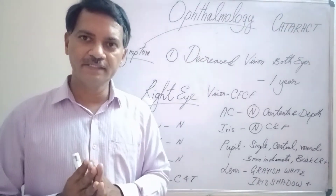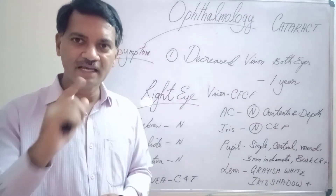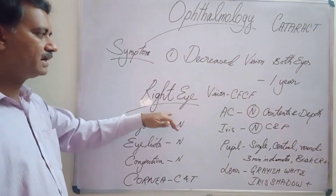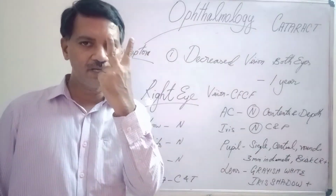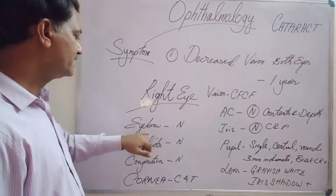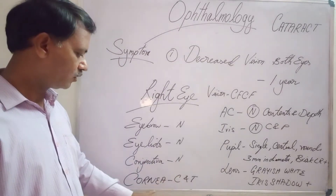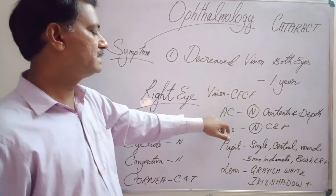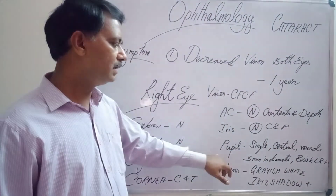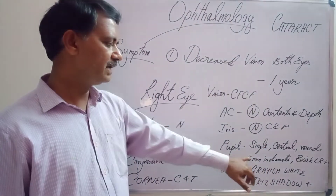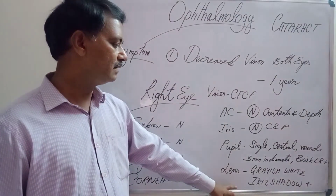Even though this patient had severe symptoms in her left eye, as per protocol I examined the right eye first. The visual acuity in the right eye was counting fingers close to the face. On examining the eyebrow, eyelids, conjunctiva, cornea — everything was normal. The cornea was clear and transparent. The anterior chamber content and depth were normal. The iris showed normal colour and pattern. The pupil was single, central, round, 3mm in diameter, and briskly reacting to light. The lens was greyish-white in colour and there was an iris shadow present.